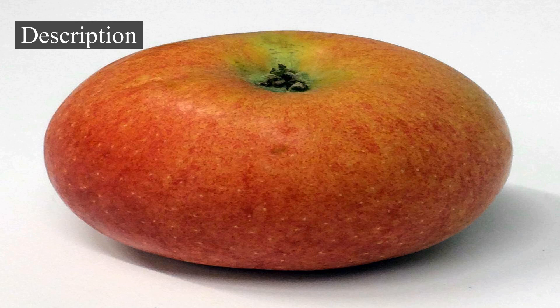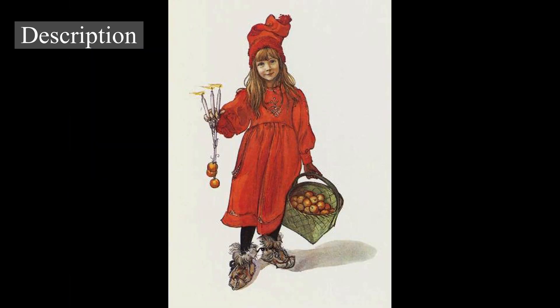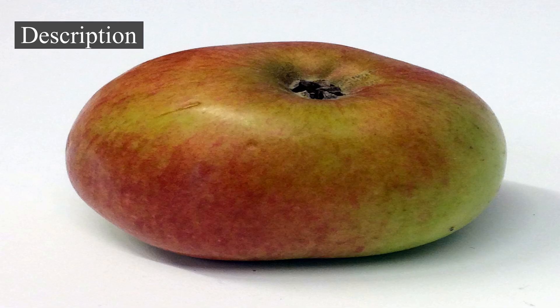The fruit is a pome that matures in late summer or autumn, and cultivars exist in a wide range of sizes. Commercial growers aim to produce an apple that is 7 to 8.5 cm (2¾ to 3¼ in) in diameter due to market preference. Some consumers, especially those in Japan, prefer a larger apple, while apples below 5.5 cm (2¼ in) are generally used for making juice and have little fresh market value. The skin of ripe apples is generally red, yellow, green, pink, or russeted, though many bi- or tricolored cultivars may be found. The skin may also be wholly or partly russeted, i.e., rough and brown. The skin is covered in a protective layer of epicuticular wax.